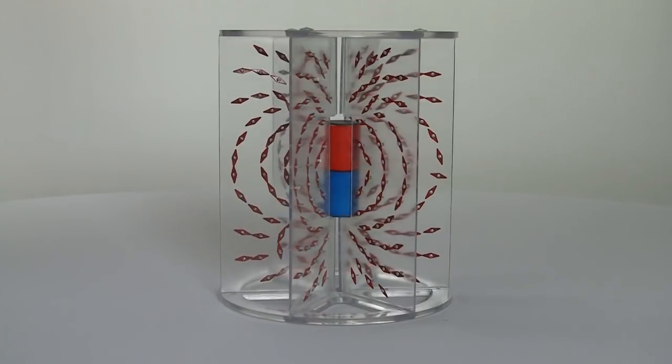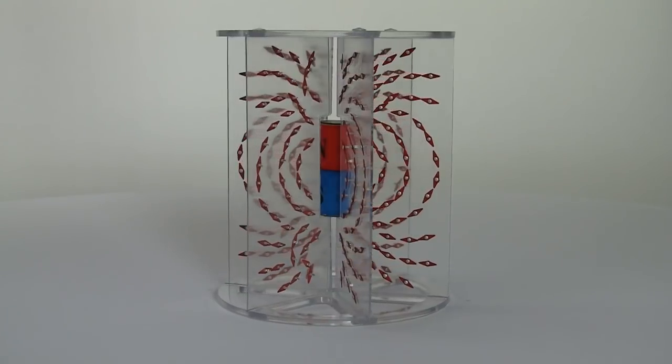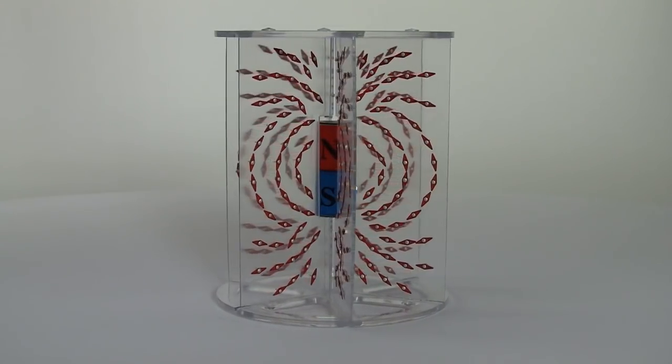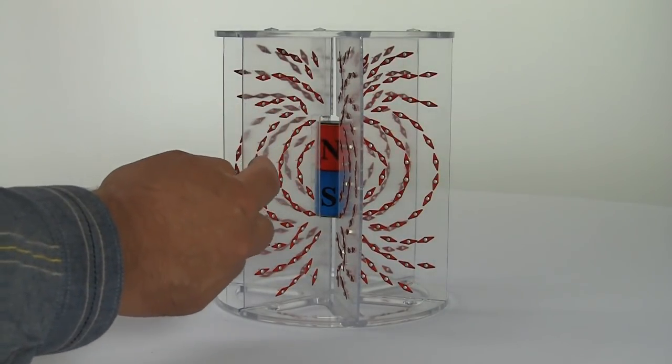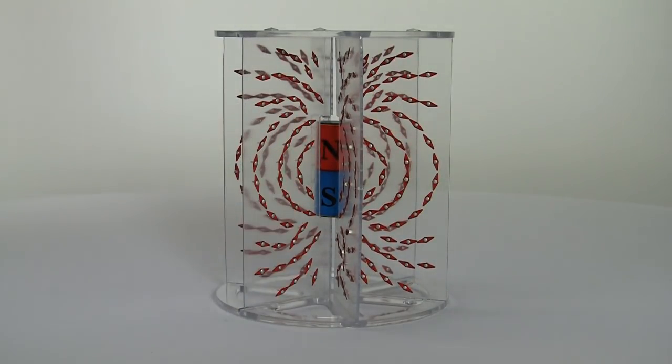Now the convention scientists use to draw magnetic fields is that the magnetic field lines come out of a north pole and loop around into a south pole.